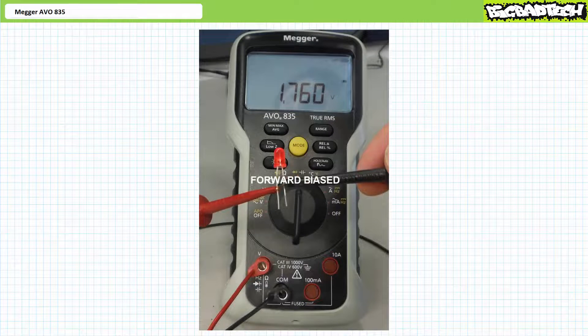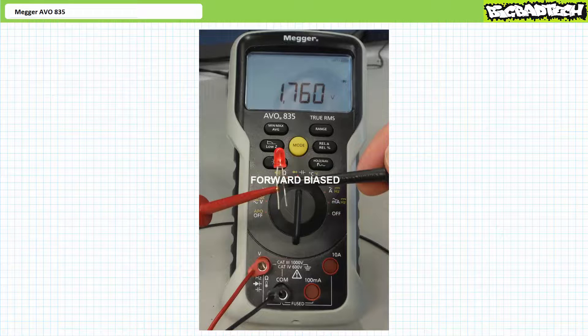When the live red lead is placed on the longer positive terminal and the black common lead placed on the shorter negative terminal, this LED illuminates and the AV0835 indicates it necessitates roughly 1.8 volts to do so. This diode is functional and is forward biased.